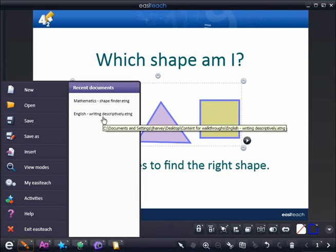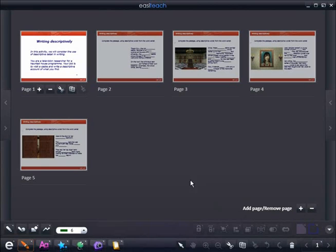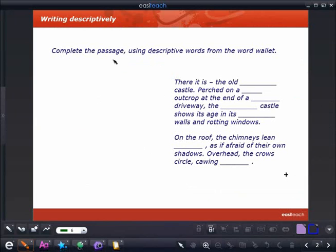Going to the menu, we can quickly move on to an English lesson. After deciding whether to save, we can move into our descriptive writing activity where we can go to storyboard mode and view all the pages in our file, then quickly select one to jump to page two.